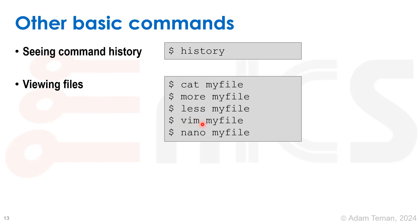Vim is one of the two major text editors — one is Vim, the other is Emacs — and people really do debate which is better. Vim will open a text editor and you can do all kinds of word processing on the file. Nano is a simpler word processor that might be easier to start with when you're just beginning with Linux.